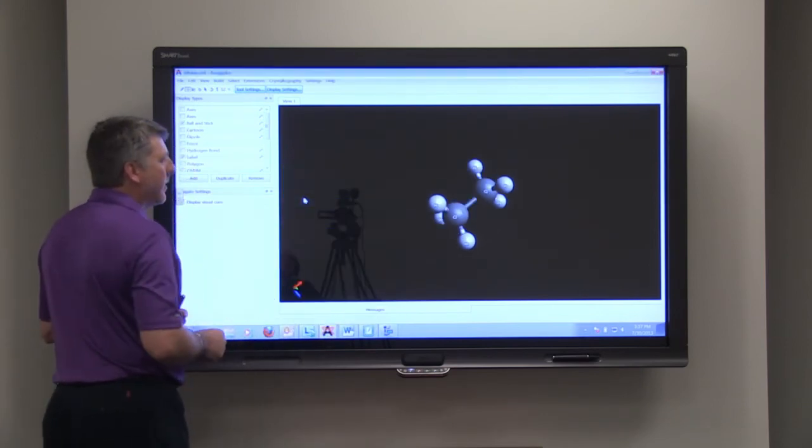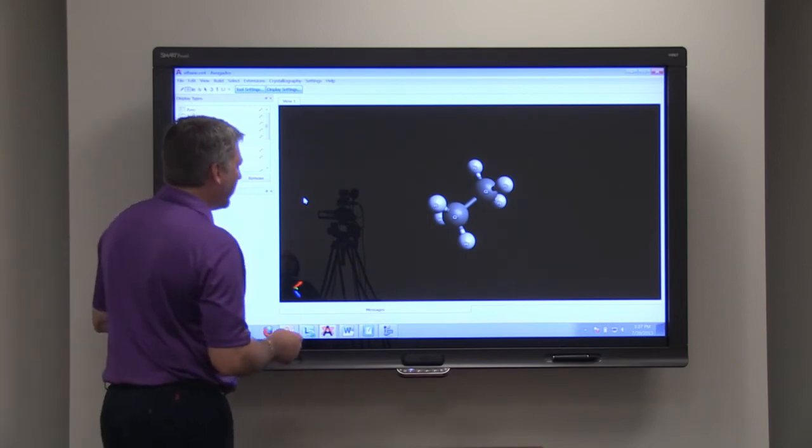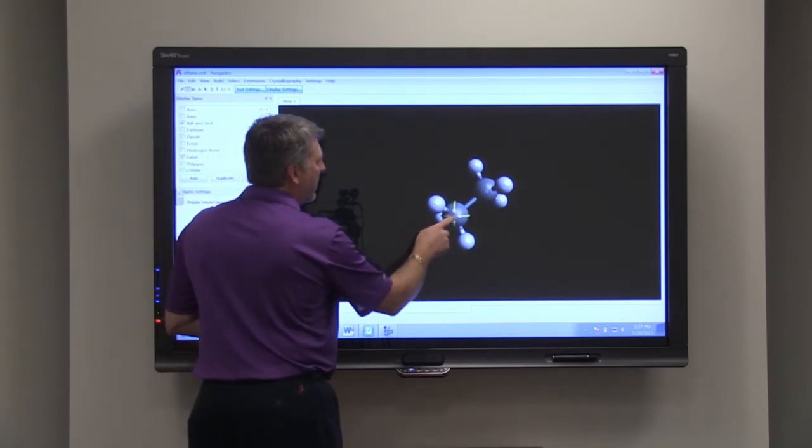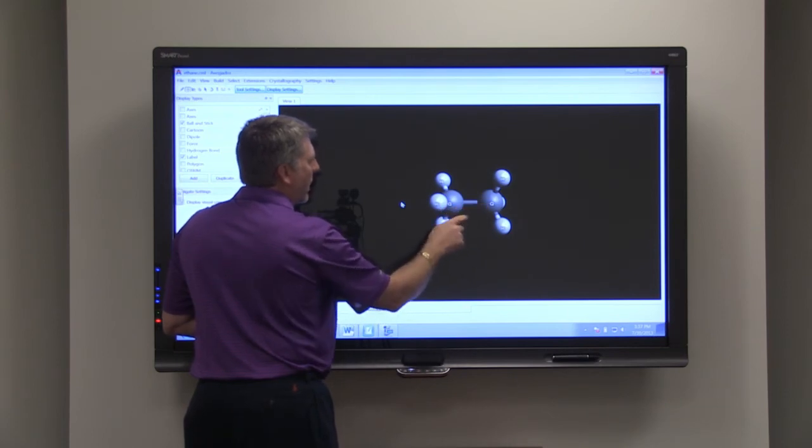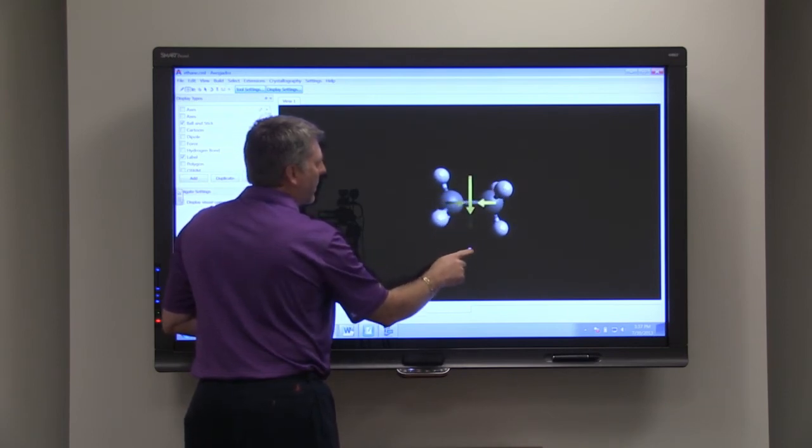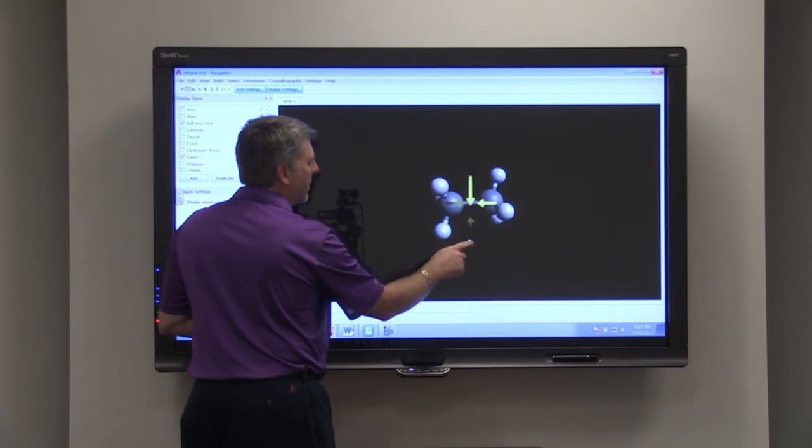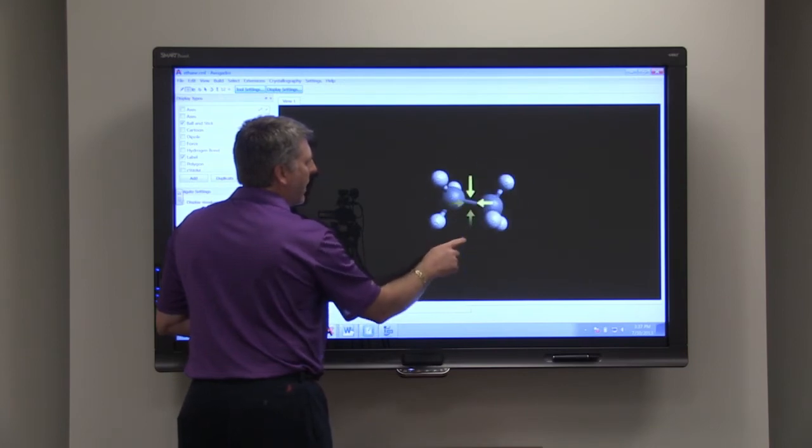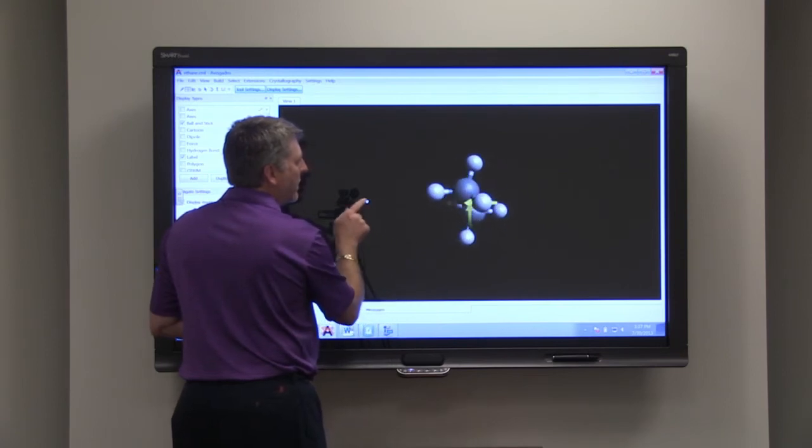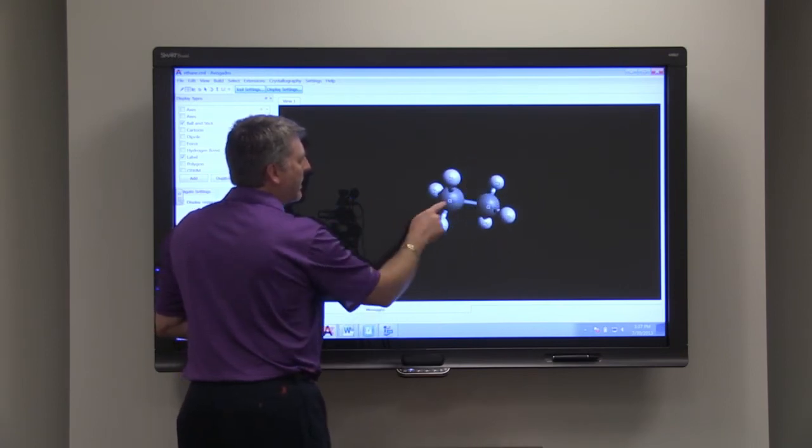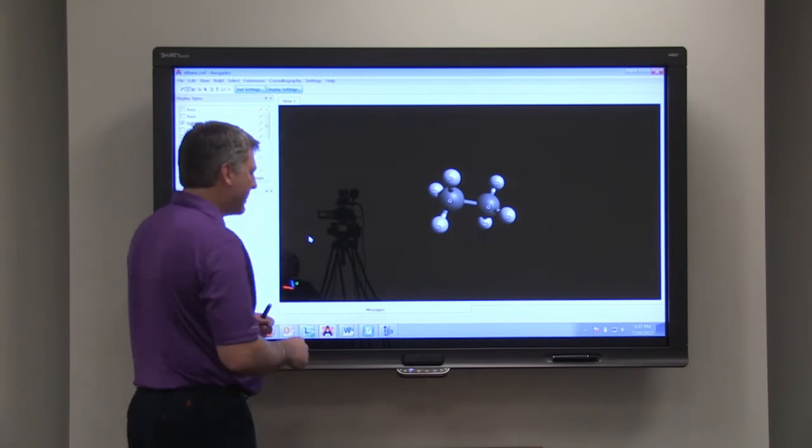Next, let's look at ethane. So ethane has two carbons. You can see carbon one and carbon two. And then if you look, as I spin it, you can see that each carbon has three hydrogens attached to it. So this is ethane. It would be C2H6.